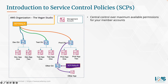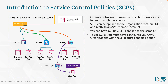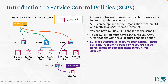Some key things to remember: service control policies control the maximum available permissions for your member accounts. They can be applied to the organization root, an OU, or directly to a member account, and you can have multiple service control policies applied to the same OU. To use service control policies, you must have configured AWS Organizations with the all features enabled option, not just the consolidated billing feature. Service control policies are guardrails — account boundaries. Users still require identity-based or resource-based permissions to perform tasks in your AWS account.